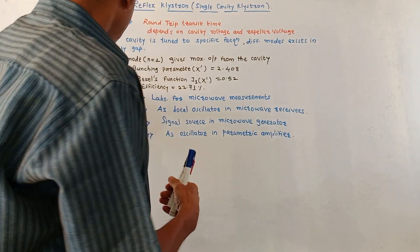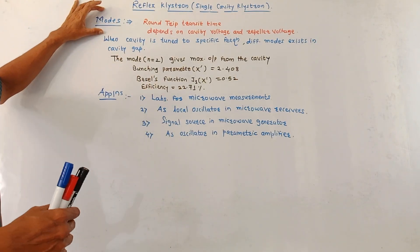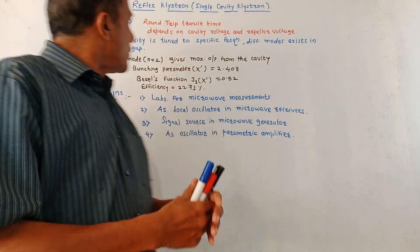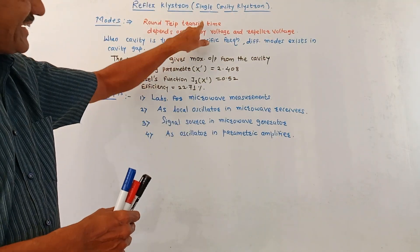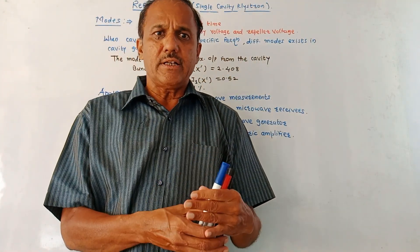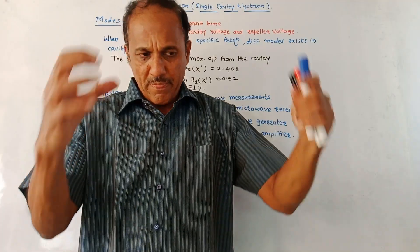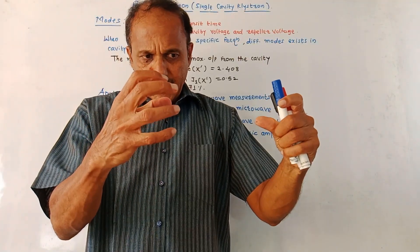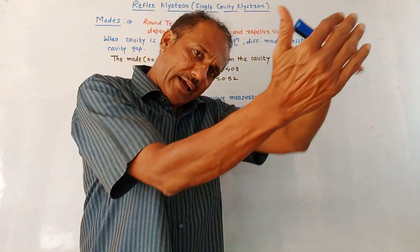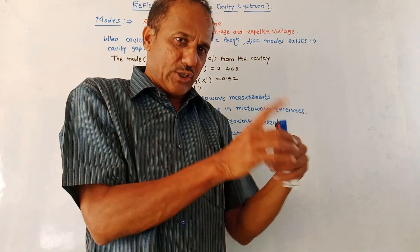Next, we'll discuss different modes in case of reflex klystron. There is one term called round trip transit time. What we discussed while studying the working of reflex klystron: electrons enter into the cavity gap, move forward, reach the repeller anode and get reflected back.